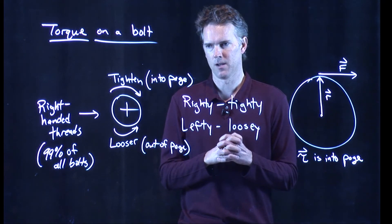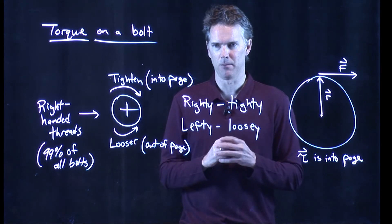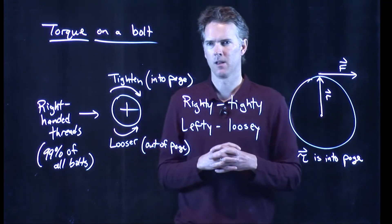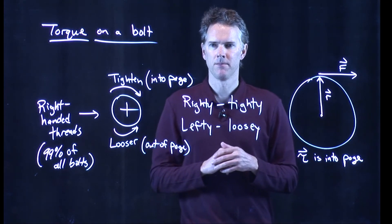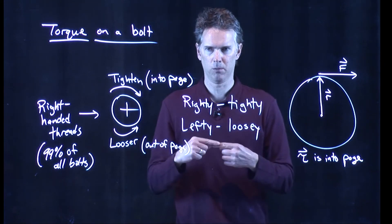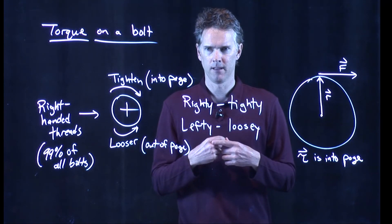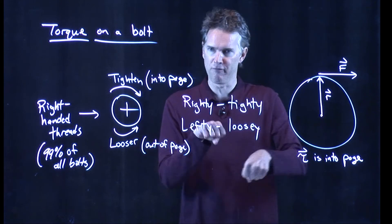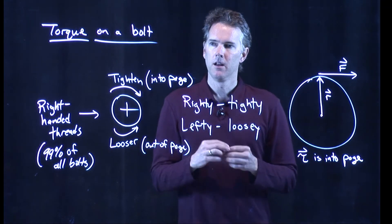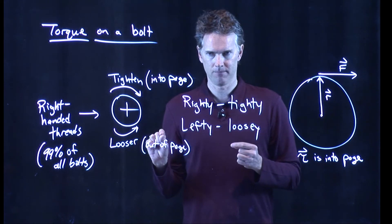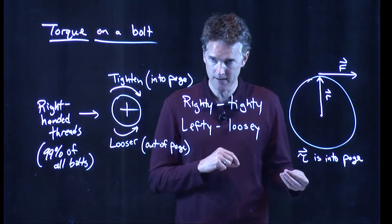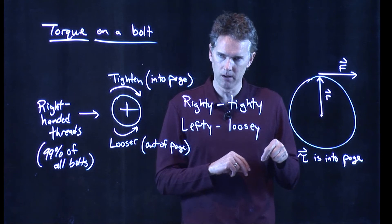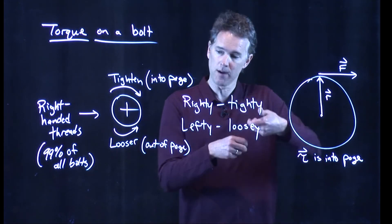Where is that left-handed bolt on your bicycle? Is it when you tighten your seat? Handlebars? Not on the handlebars. Not on the wheels. Not on the axle of the wheels. But there's something else that spins on your bike — what is it? The crank — where the pedals attach to that piece of metal that you spin with your feet. Then there's a gear and a chain. That crank: one of those is left-handed, one is right-handed. It turns out that the pedal on the right actually has left-handed threads.